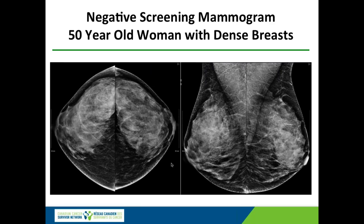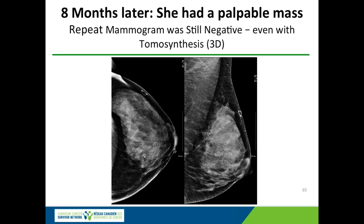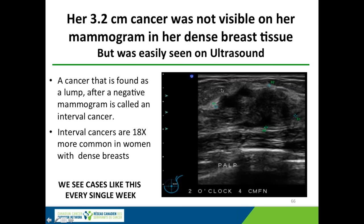Here's an example of dense breast tissue hiding a cancer. This is actually an acquaintance of mine. At age 50, she had a screening mammogram which was read as negative — remember, negative doesn't always mean no cancer. Eight months later she came back because she noticed a lump in her left breast. We repeated her mammogram and it was still negative. We even did a 3D mammogram on her and it was completely negative. But when I put the ultrasound probe on her lump, there it was — a 3.2 centimeter cancer easily seen on ultrasound. It had already spread to her lymph nodes. When a cancer is diagnosed after the most recent screening mammogram is negative, it's called an interval cancer, and interval cancers are 18 times more common in women with dense breasts.